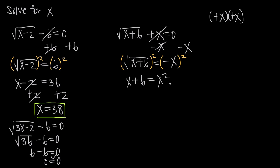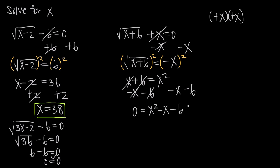So we have x plus 6 equals x squared. We want all non-zero terms on one side, so we subtract x and subtract 6 from both sides to get 0 equals x squared minus x minus 6. This is a standard trinomial we can factor: 0 equals x minus 3 times x plus 2. Checking: x times x gives x squared, plus 2x minus 3x gives minus x, and negative 3 times positive 2 gives negative 6 — so we factored correctly.